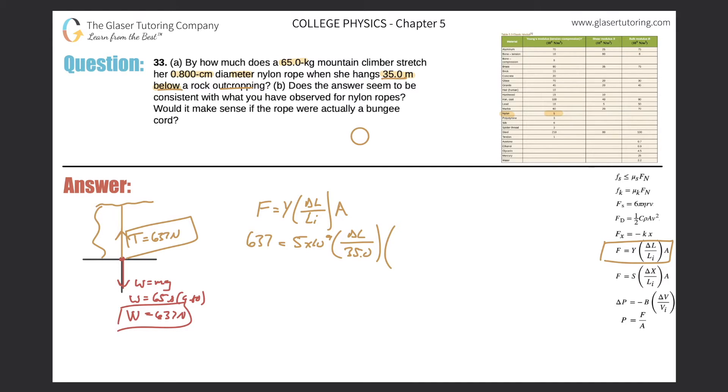So if that's the diameter, what's the radius? Just divide it by two. The radius is 0.400 centimeters. Now I need to find the meter value.